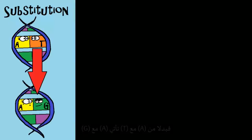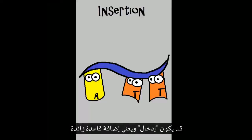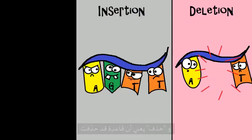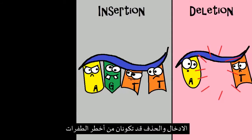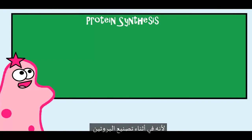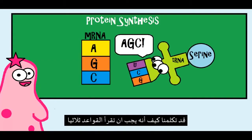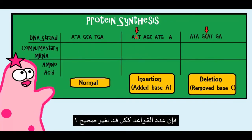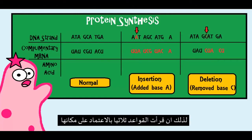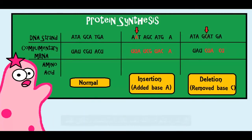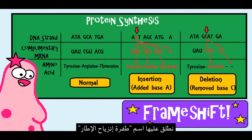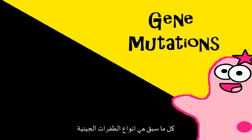The first type of gene mutation is substitution — that means you have the wrong base matched, so instead of A with T, you might put A with G. You can also have insertion, where an extra base is added in, or deletion, where a base is removed. Insertions and deletions can be especially dangerous because bases are read in threes during protein synthesis. If you add or remove a base, everything read afterwards can get messed up — we call this a frameshift.